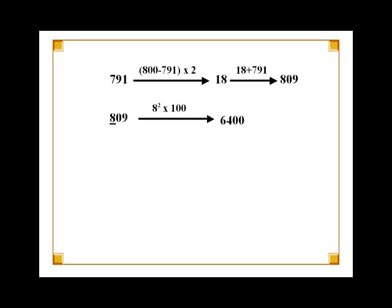In the second step, we square the leftmost digit of 809 and multiply the result with 100. The square of 8 is 64. So, multiplying 64 with 100 gives us 6400.